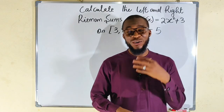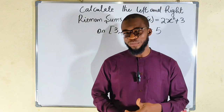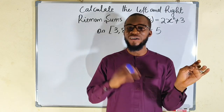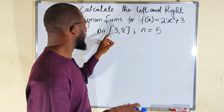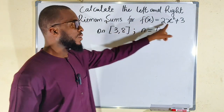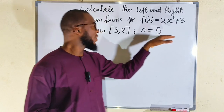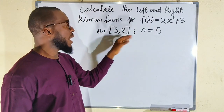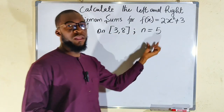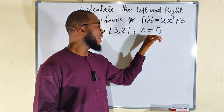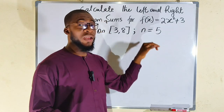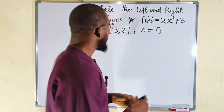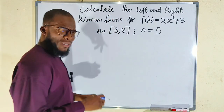Hello, good day viewers. Still on the Riemann sums — today we are going to evaluate the left and the right Riemann sums for the function 2x squared plus 3 on an interval from 3 to 8, and we are given n equal to 5. Remember that n is nothing but the number of rectangles.